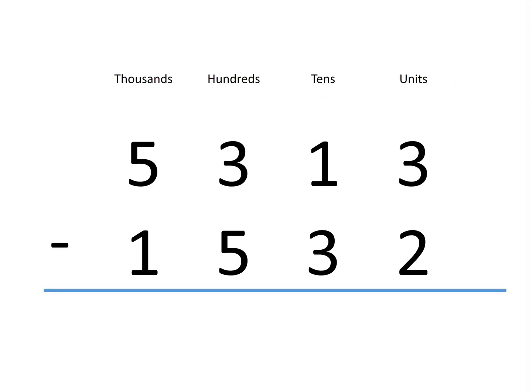We can also find the difference using columns. When subtracting using columns, it's important to start with the units first. When we subtract 2 from 3, we get 1.